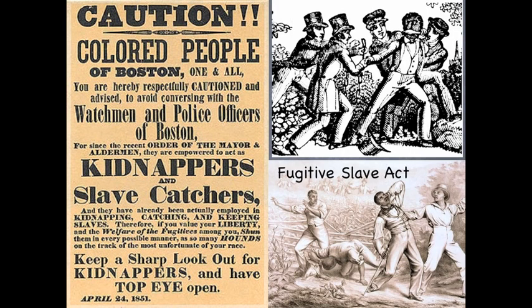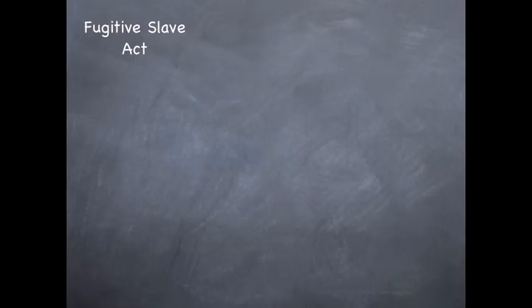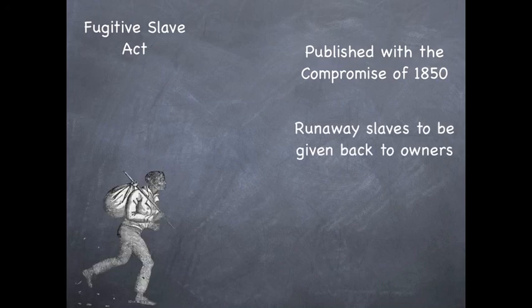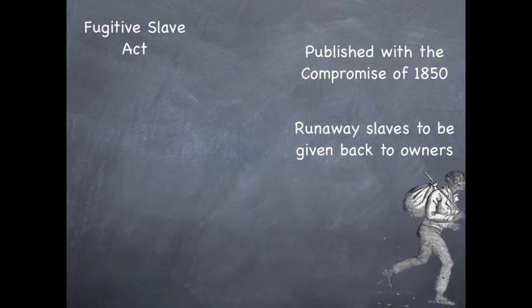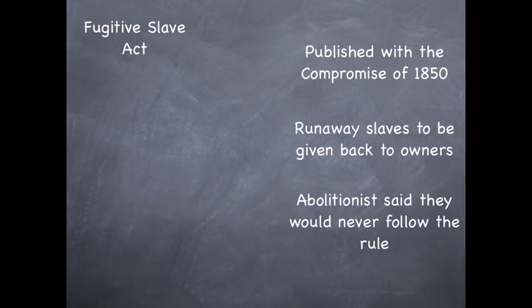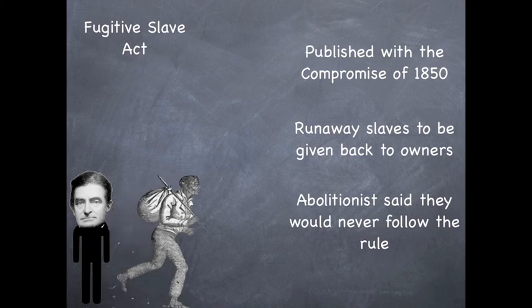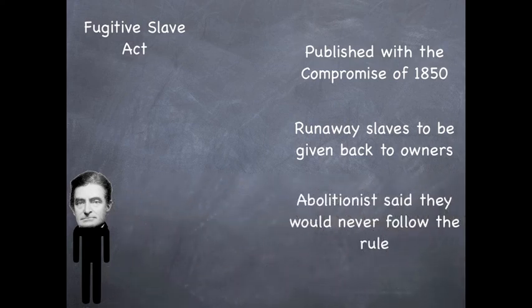The Fugitive Slave Act was a huge conflict because the North abolitionists did not want it to happen, but the South did. The Fugitive Slave Act was published with the Compromise of 1850, requiring runaway slaves to be given back to their owners. Abolitionists said they would never follow the rule.